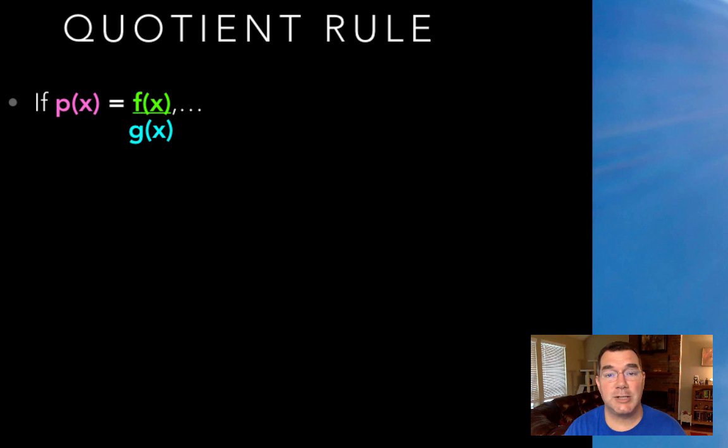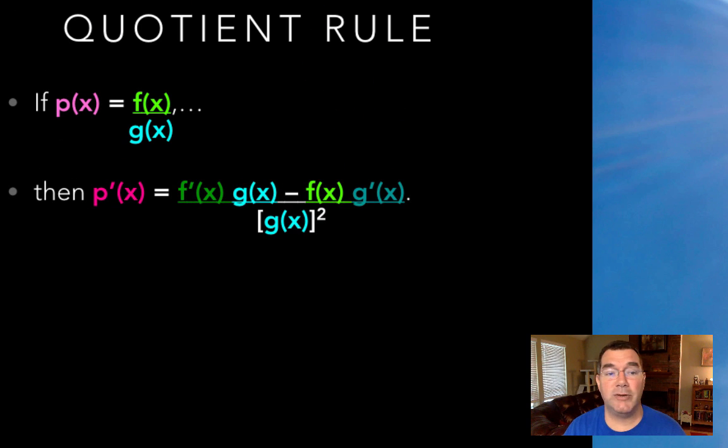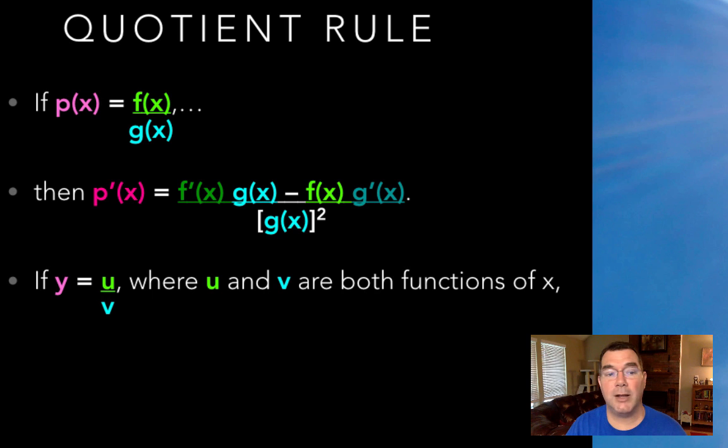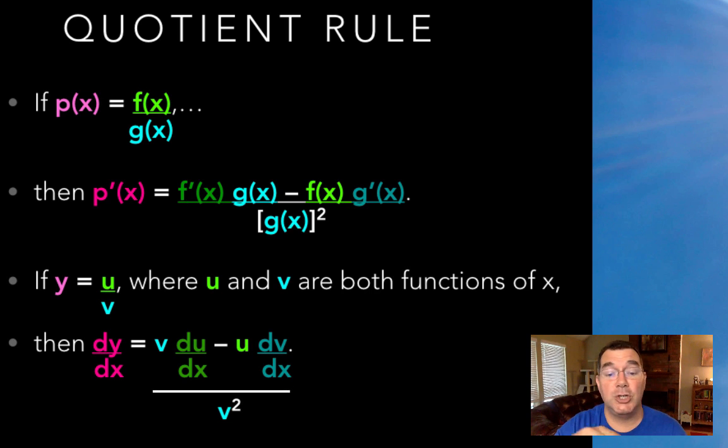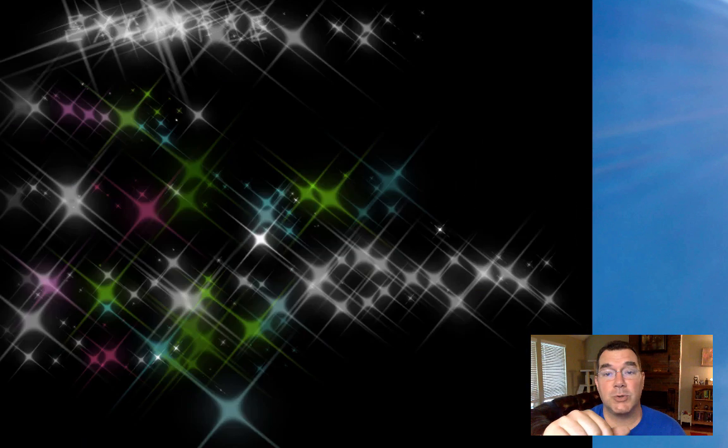If I have a function that's made up of two functions being divided instead of multiplied, then the rule is the derivative for that function will be the derivative of f, f prime, times g of x minus f of x times g prime of x all over g of x squared. And I need to talk about it in terms of u and v as well. If y is a function u over a function v, then the derivative of that is going to be v du dx minus u dv dx all over v squared. So both of those notations are important.